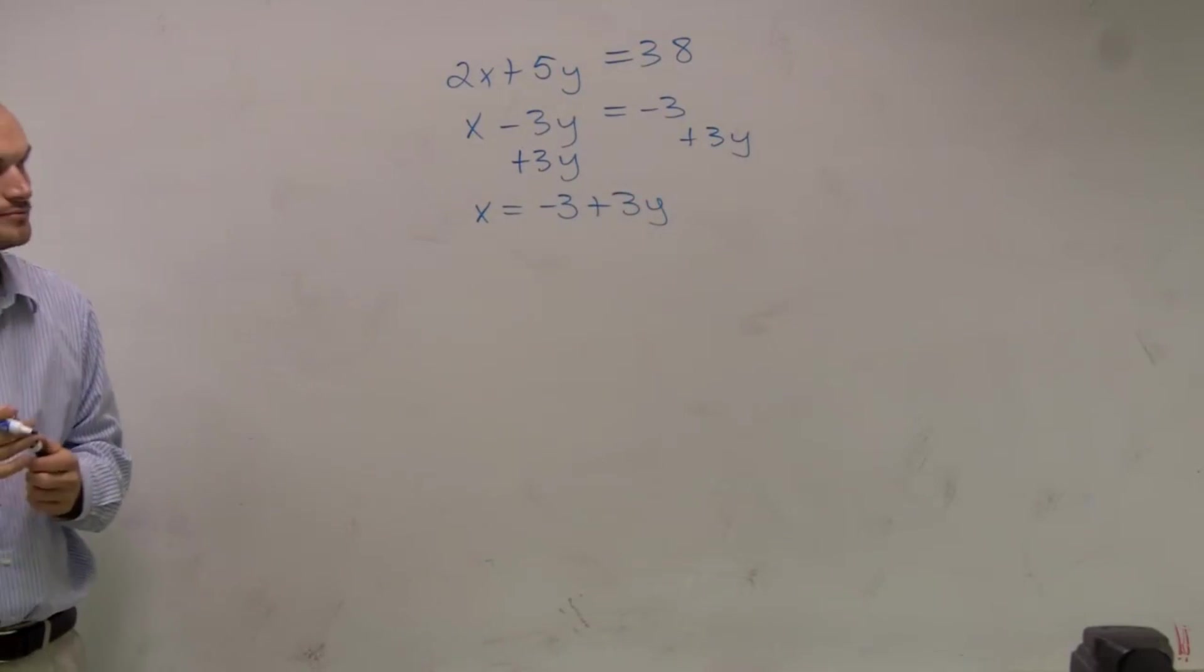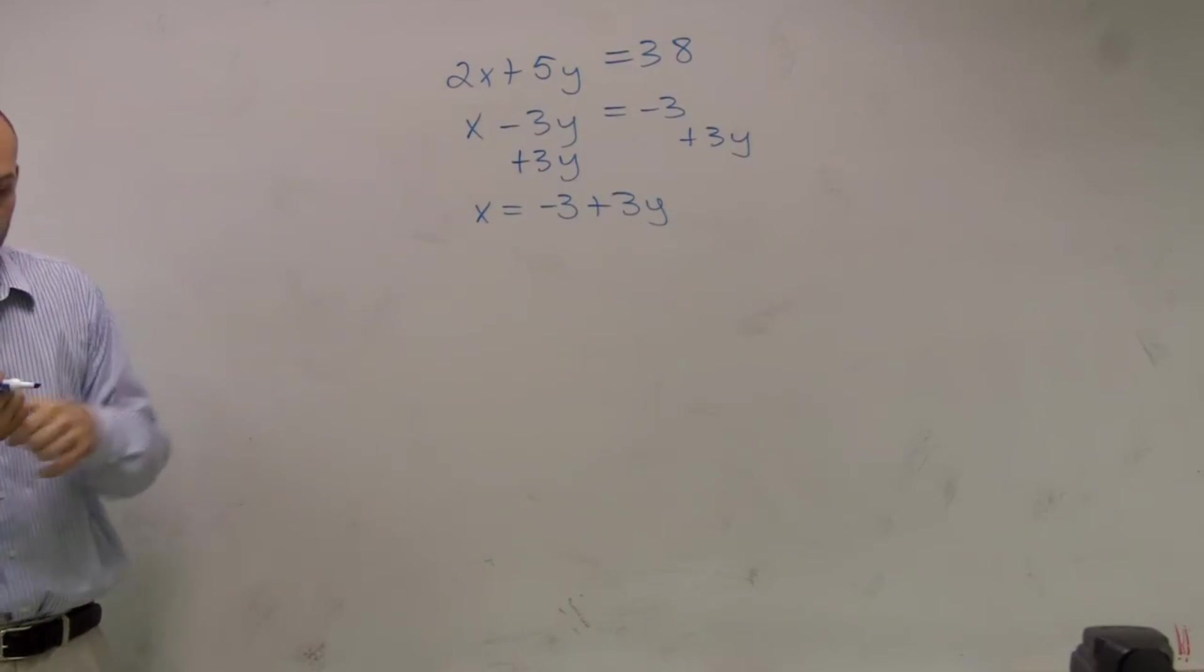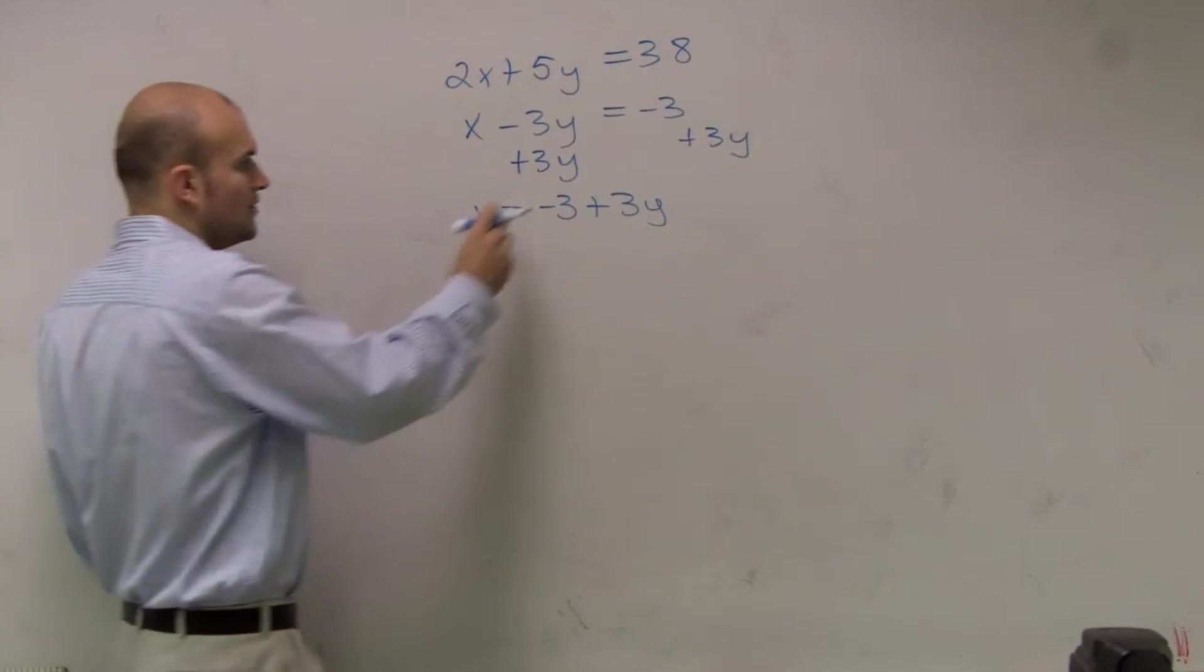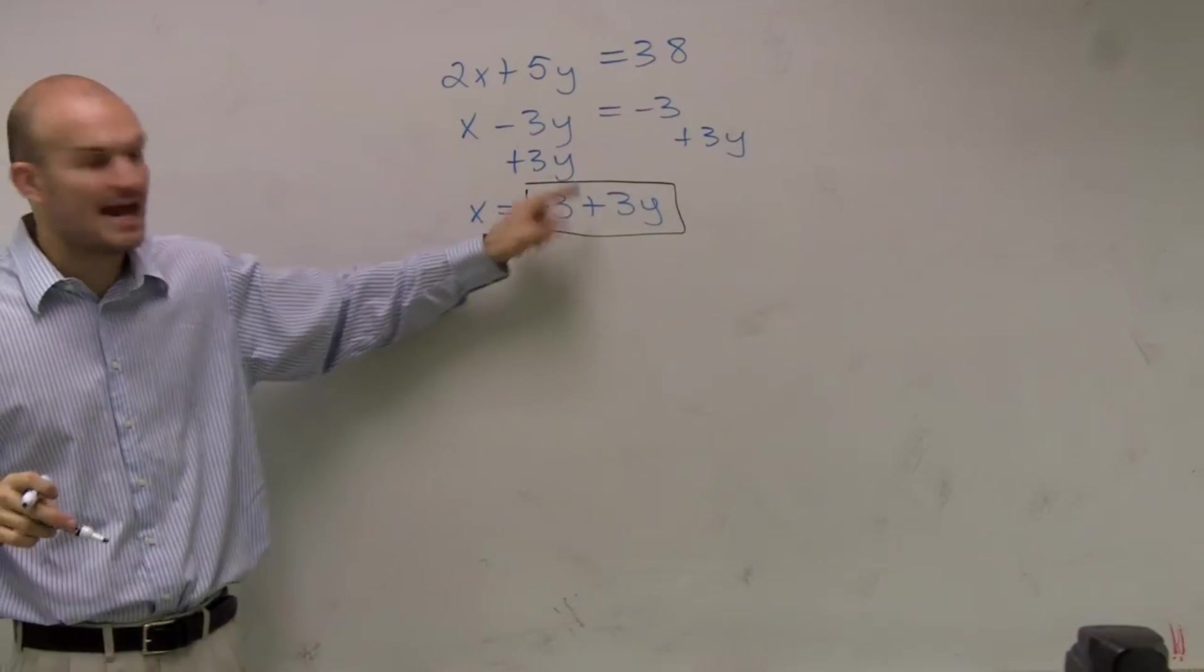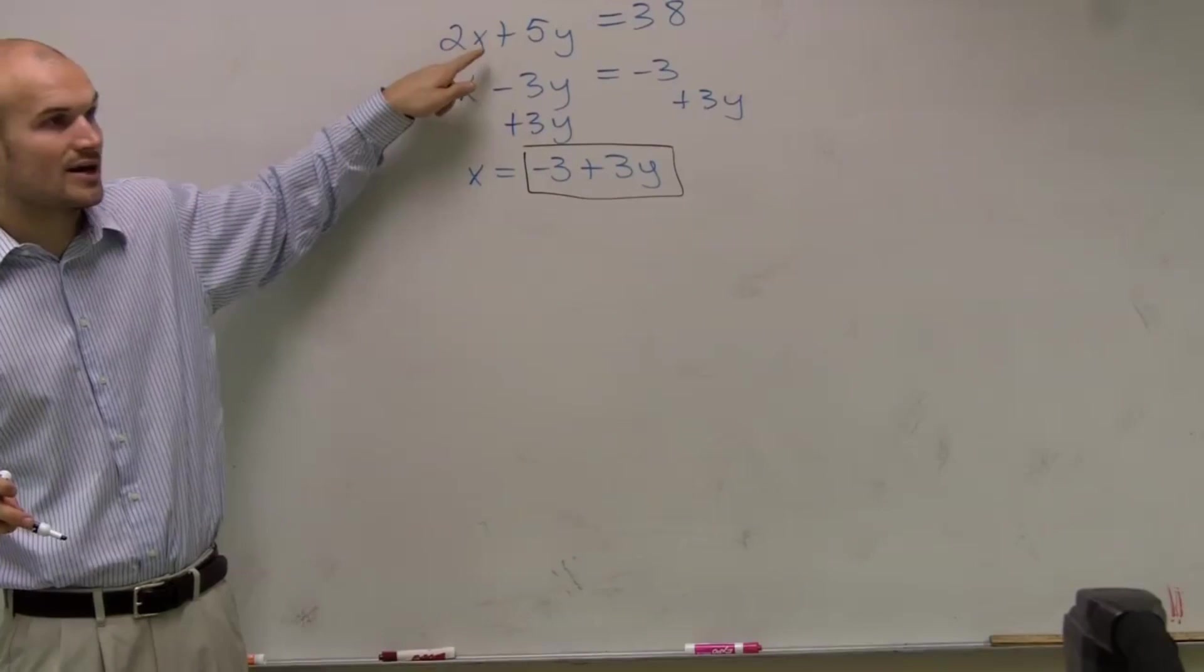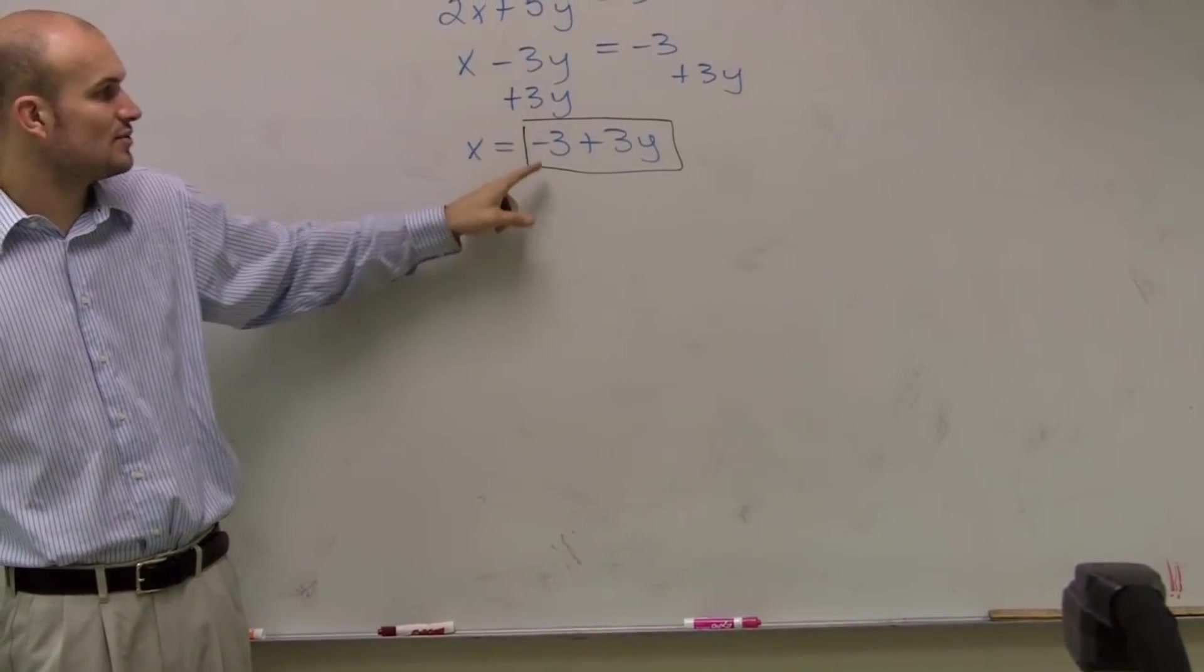So therefore, I have x equals negative 3 plus 3y. What I'm going to do is this value, I can now say that x equals negative 3 plus 3y. So rather than writing x up there, I can write in the value of what x is from my second equation.